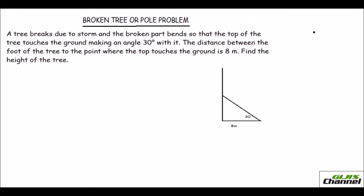Hello, yet another problem is the broken tree or pole problem. A tree is broken and it touches the ground at some angle, and they may ask you to find the height of the tree or pole. A tree breaks due to storm and the broken part bends so that the top of the tree touches the ground making an angle of 30 degrees. The tree breaks here and this part falls down.